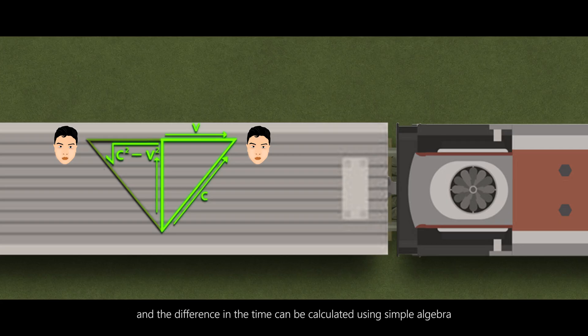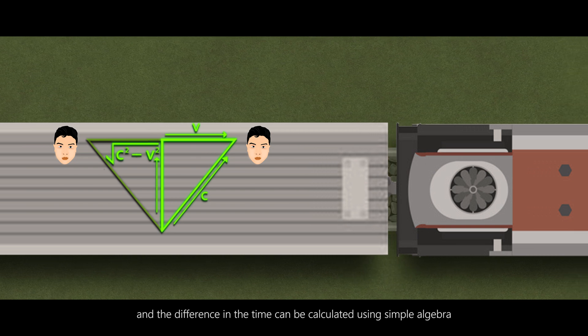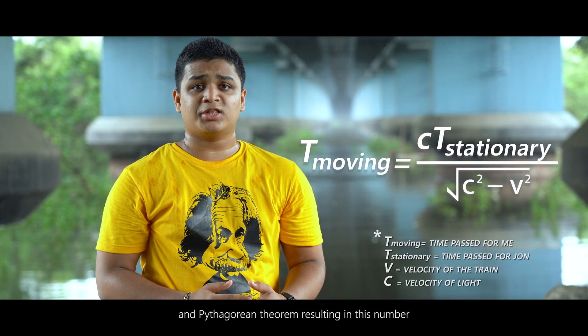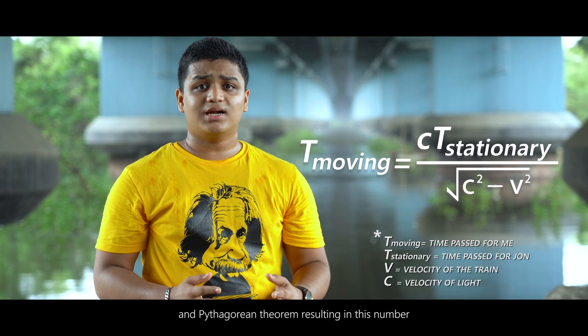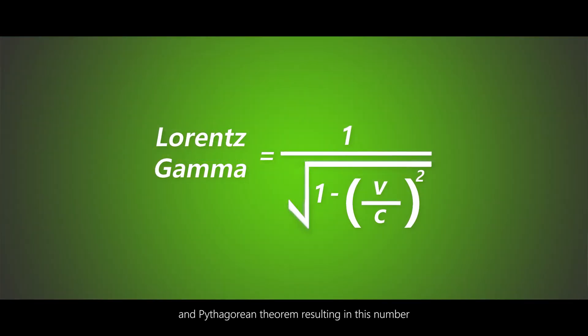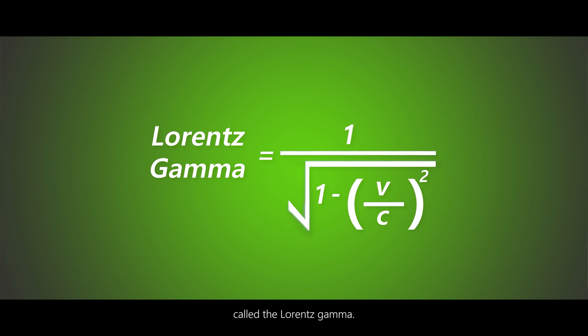The difference in time can be calculated using simple algebra and the Pythagorean theorem, resulting in a number called the Lorentz Gamma.